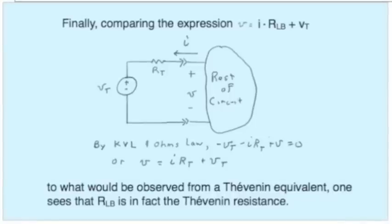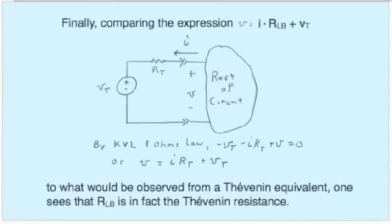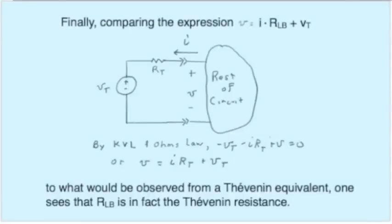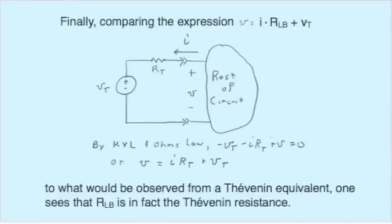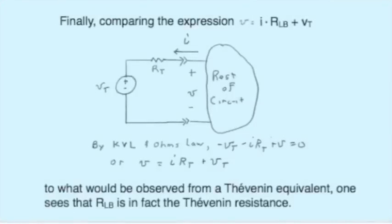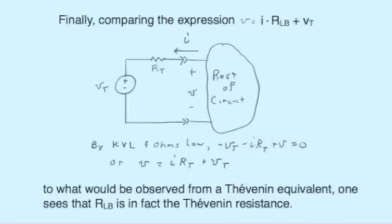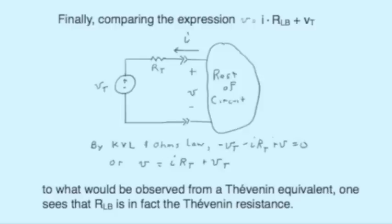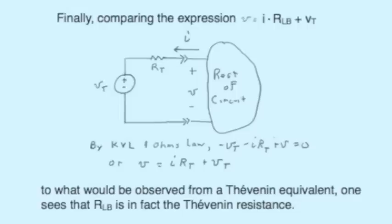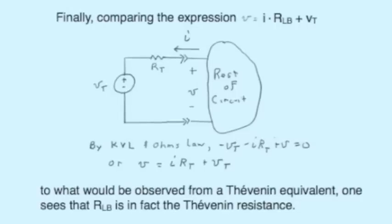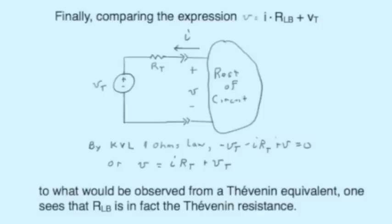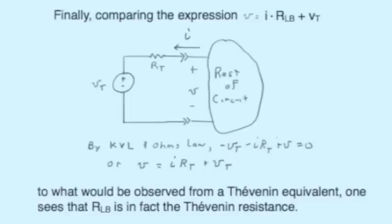One more key step: we want to show that the look-back resistance is nothing more than the Thevenin resistance. To see this, replace the source circuit — part A — with the Thevenin equivalent. Using Ohm's law and Kirchhoff's voltage law: minus V sub T minus I times R sub T plus V equals zero, or V equals I times R sub T plus the Thevenin voltage. Comparing this to the earlier equation, they are exactly the same if R look-back equals R Thevenin. So R Thevenin may be found by the look-back method — kill all the sources and find the equivalent resistance — or by taking the ratio of open circuit voltage to short circuit current.